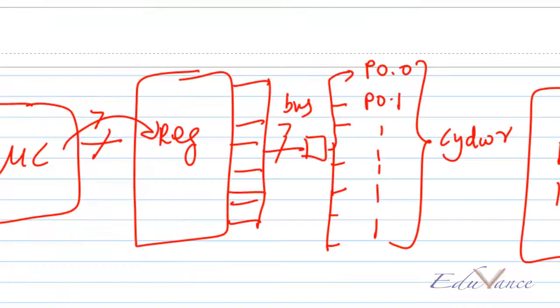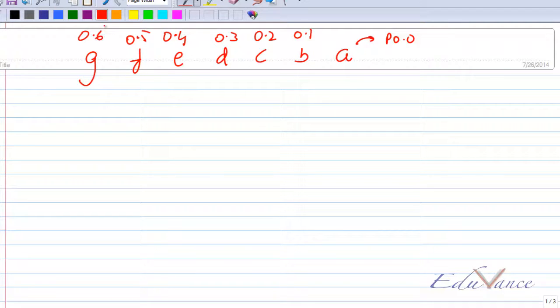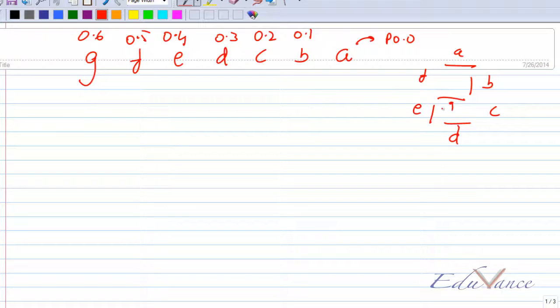These are the values for displaying each digit. Let's take an example. Since my lowest bit is A, A has been mapped to P00. Now if I want to display the number 2, which has segments A, B, D, E, and G on, while C and F are off — this is A, B, C, D, E, F, and G. So A, B, C, D, E, F, G of which C and F are off.